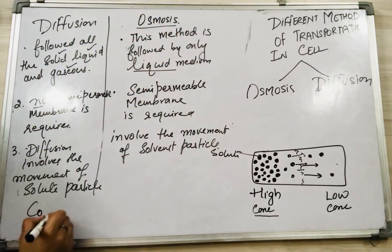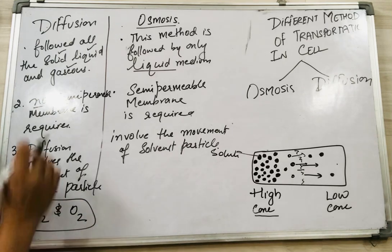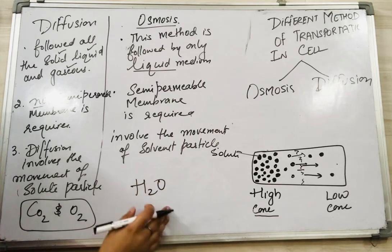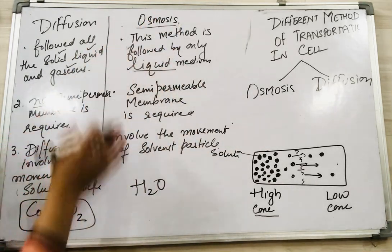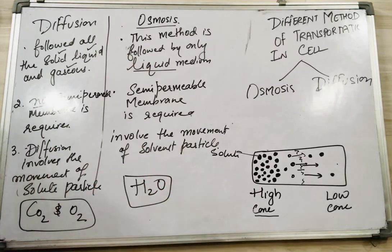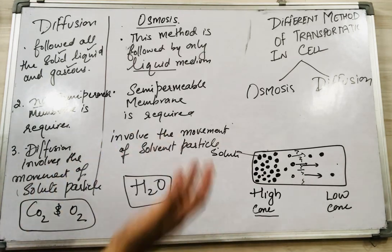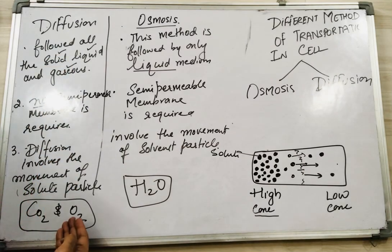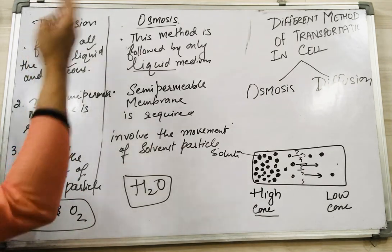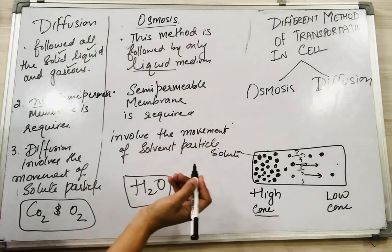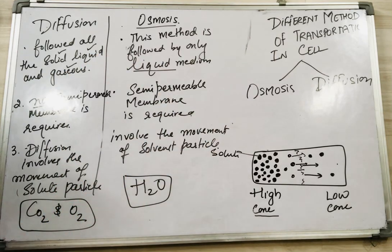Carbon dioxide and oxygen diffuse into the cell by the method of diffusion. And liquid or water moves into and out of the cell with the help of osmosis. So if somebody asks how carbon dioxide or oxygen gets transported into the cell, you just write that gases always diffuse, whereas water moves by the process of osmosis. This is what we have learnt today. See you in the next video with a new topic: three types of solutions. Thank you!